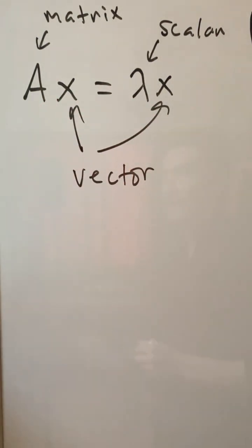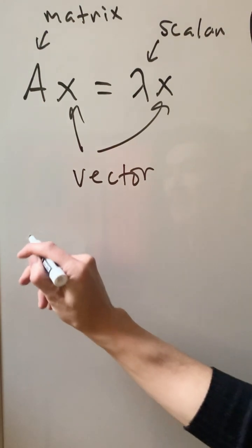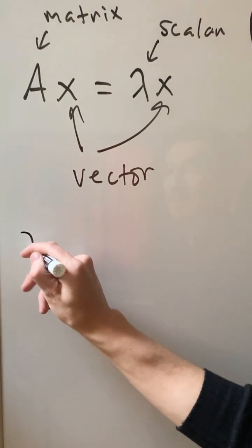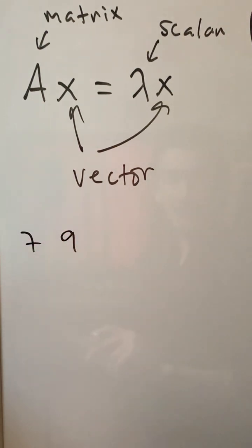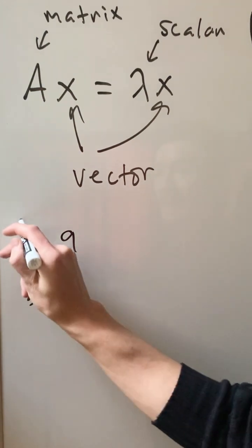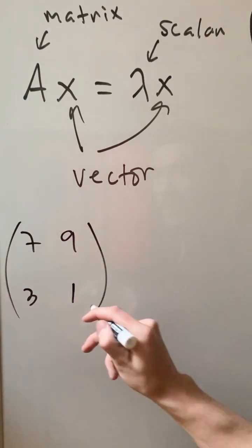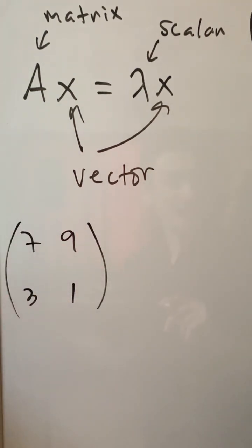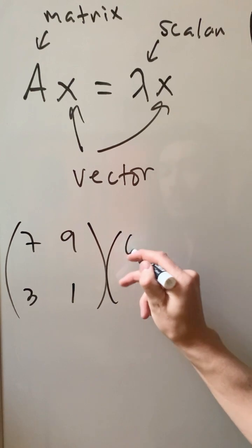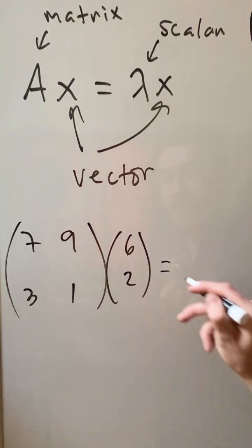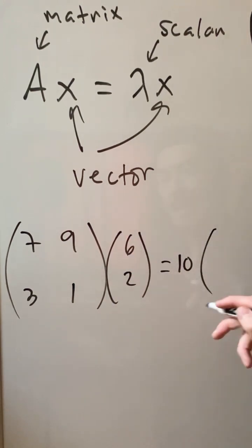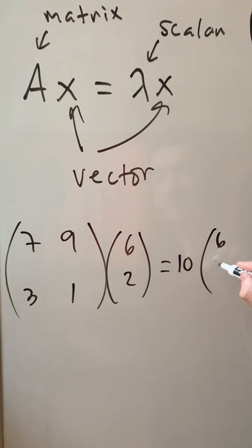Consider this example. Let's go with this matrix: 7, 9, and 3, 1. And let's go with this vector: 6, 2. And let's go with a scalar 10, and it must be the same vector — in this case, 6, 2.